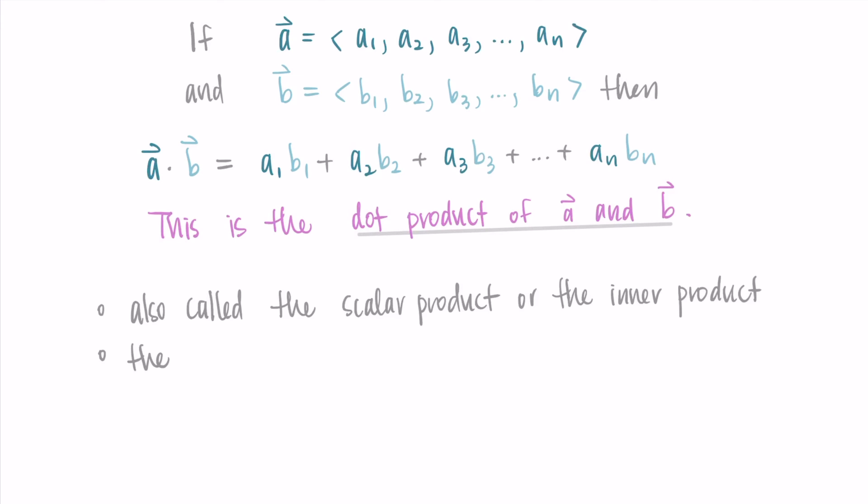And then the other thing to know is that when we do the dot product, the result of the dot product is a number. It's a constant or a scalar. So when we do the dot product of two vectors, we're not getting another vector, we're getting some value. And that value is going to give us some information about the pair of vectors we're looking at, the a and the b.